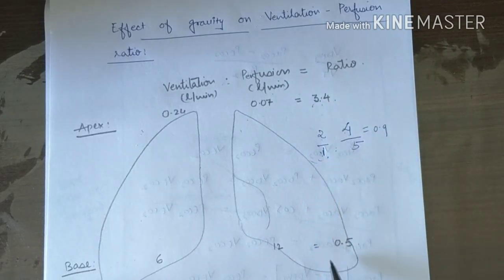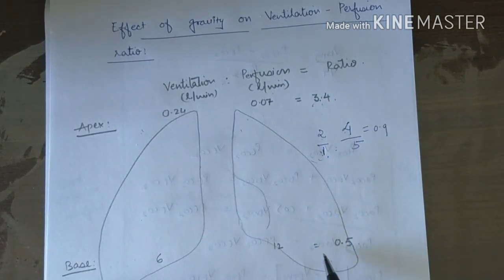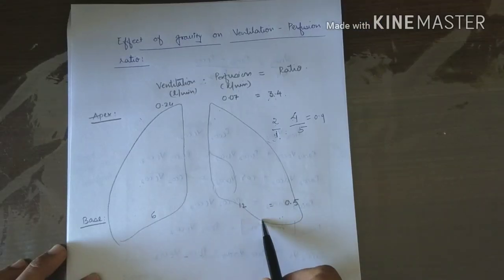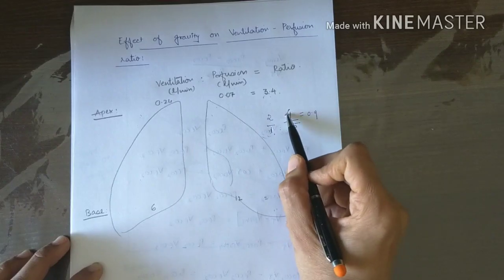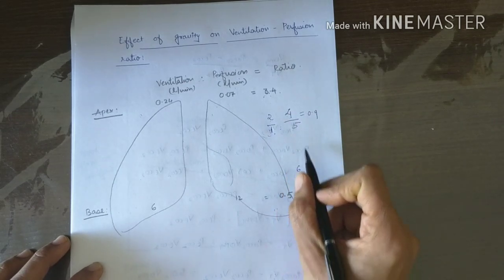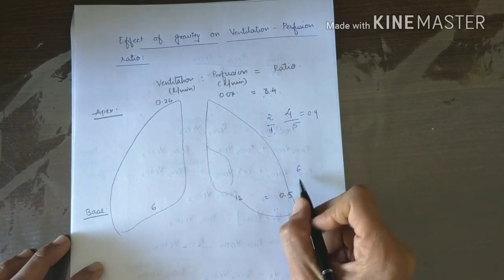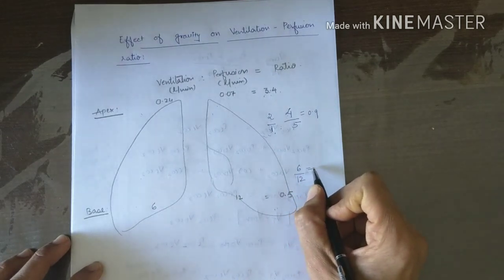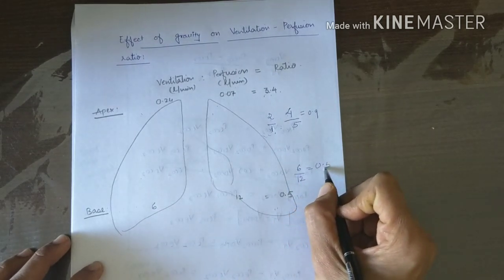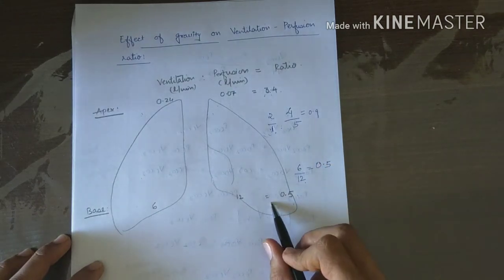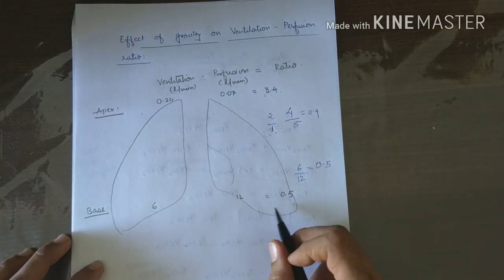The opposite happens in basal alveoli. Because of gravity, both ventilation and perfusion are increased in basal alveoli. Ventilation increases from 4 to 6 and blood flow increases from 5 to 12. Therefore the ratio becomes 6 divided by 12, which is 0.5. So the ventilation perfusion ratio decreases in basal alveoli.